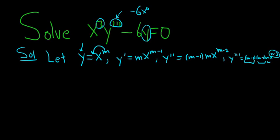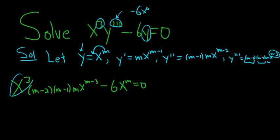So now we're going to plug everything into the differential equation. So we have x³, and then y'''. So that'll be (m - 2)(m - 1)mx^(m-3), minus 6, and then y is x^m. Whenever you're doing a Cauchy-Euler differential equation, when you get to this step, you want to combine the x's. So you have x³ and x^(m-3). When you multiply those, you add the exponents. So m minus 3 plus 3 is m.